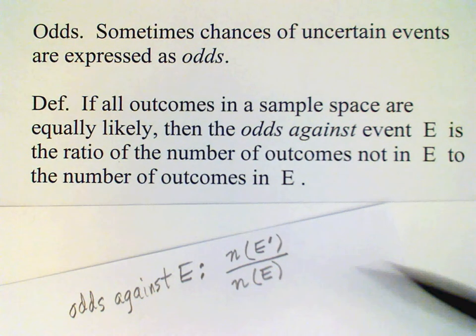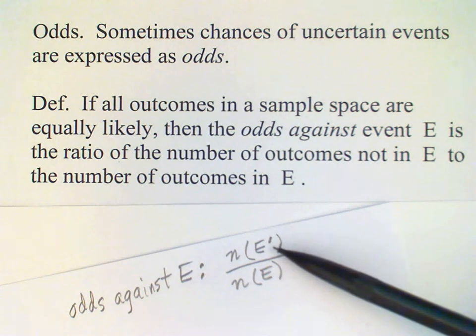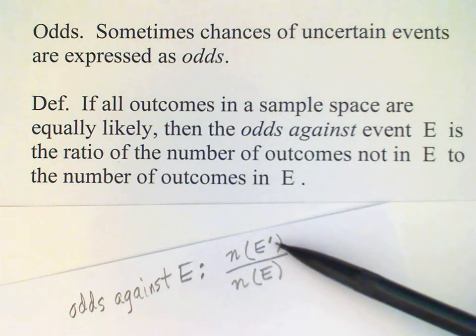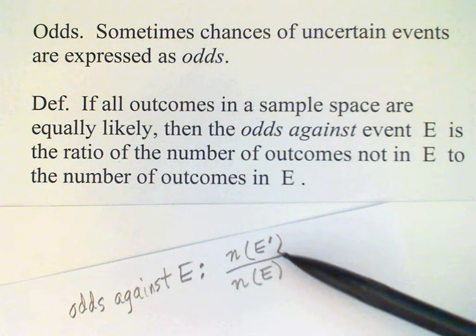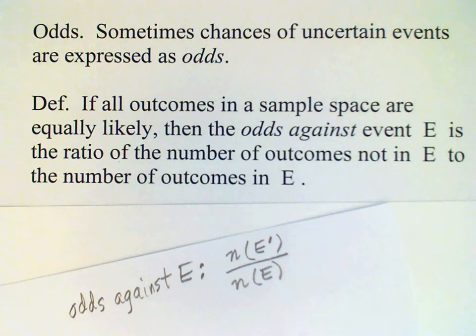Remember this little mark here from chapter 2 — that means a complement, so that's the number of outcomes that are not in E.